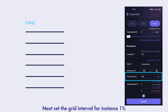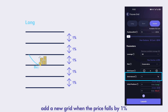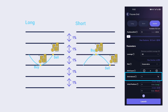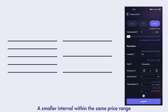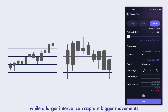Next, set the grid interval — for instance, 1%. The long bot will add a new grid when the price falls by 1%, and close a grid to secure profits when the price rises by 1%. For the short bot, it's the opposite. A smaller interval within the same price range is suitable for capturing small fluctuations, while a larger interval can capture bigger movements.